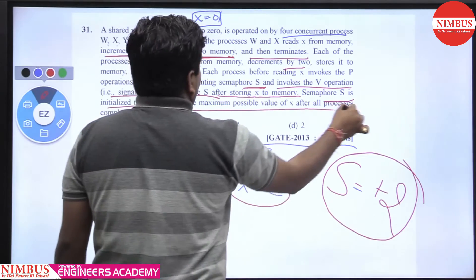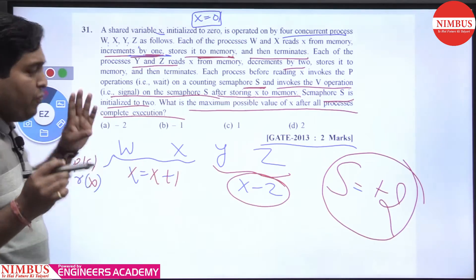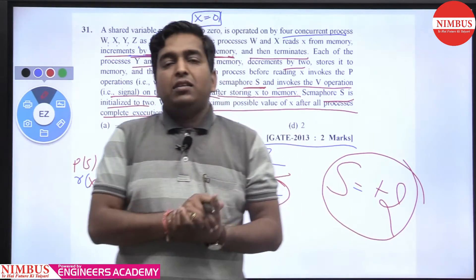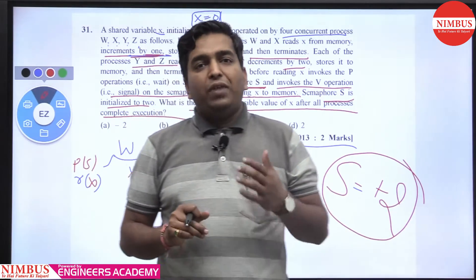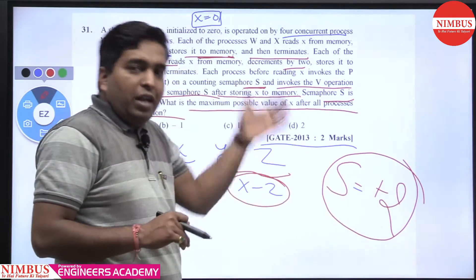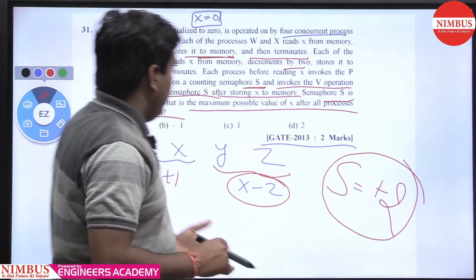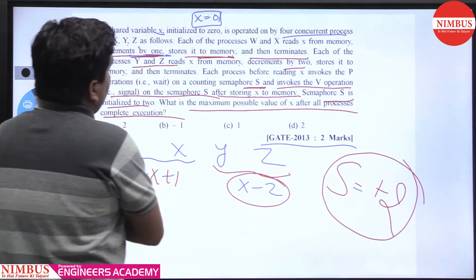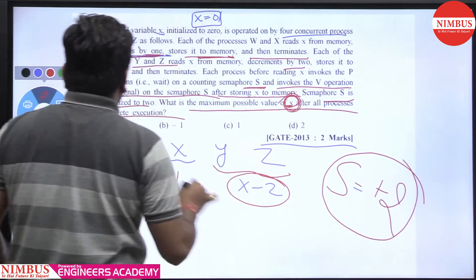The question asks: what is the maximum possible value of x after all processes complete execution? There are 4 processes w, x, y, z — w and x increment x by 1, y and z decrement x by 2. Before reading, a down operation is performed; after storing, a signal operation is performed. What is the maximum value of x?